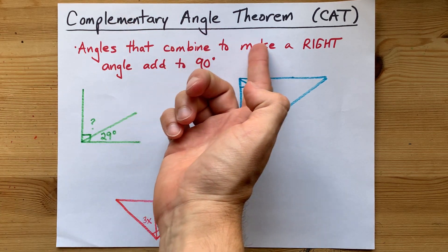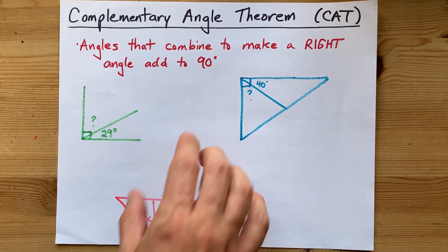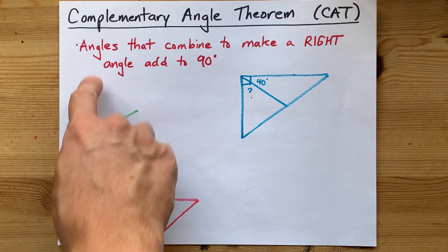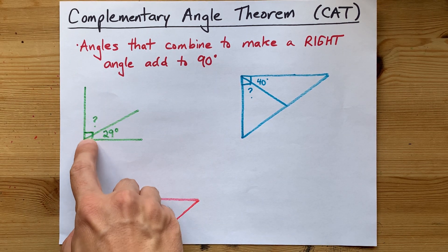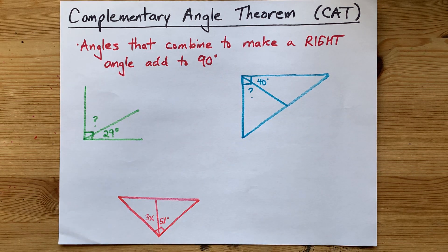The Complementary Angle Theorem, or CAT, is the idea that angles that combine to make a right angle, or a 90 degree angle, have to add up to that 90 degrees.